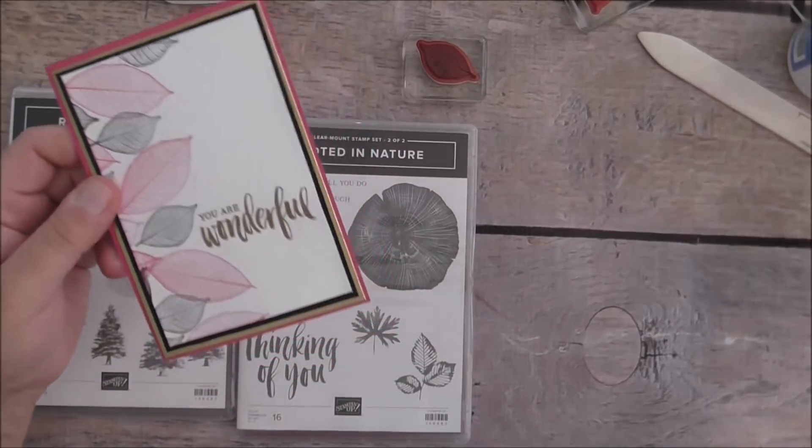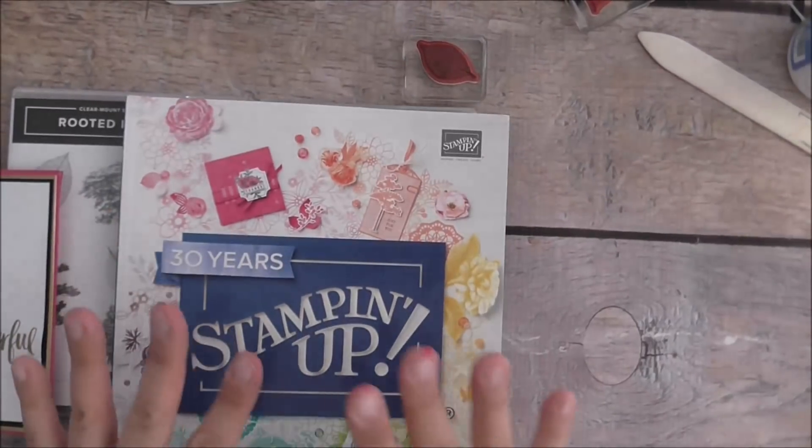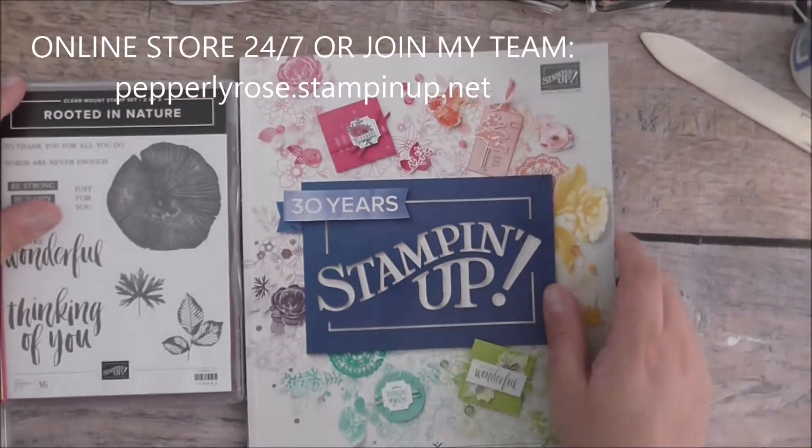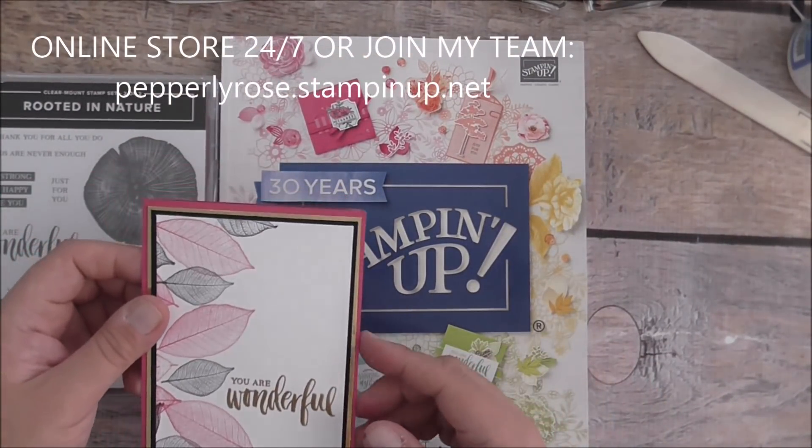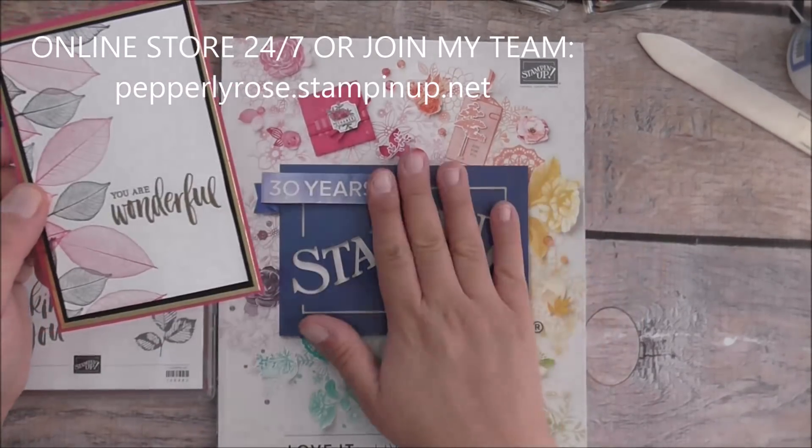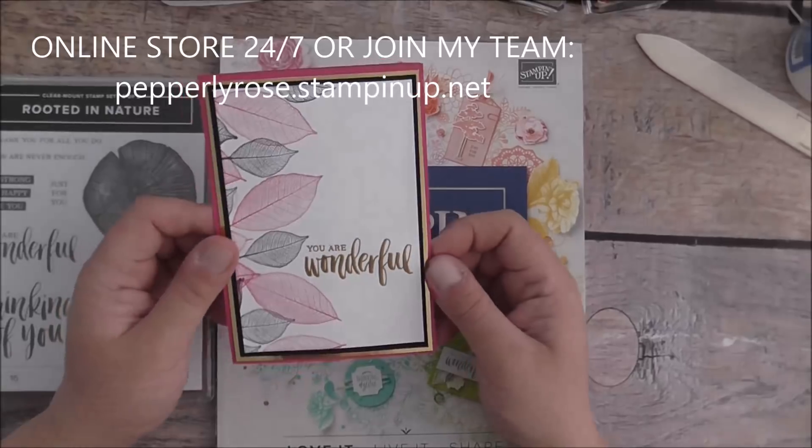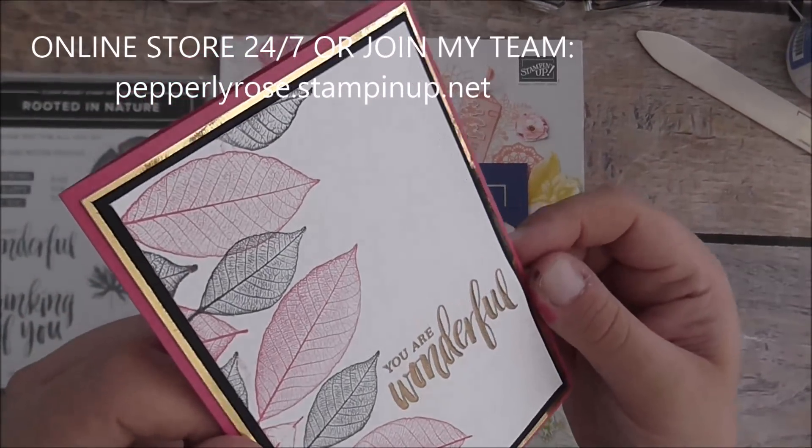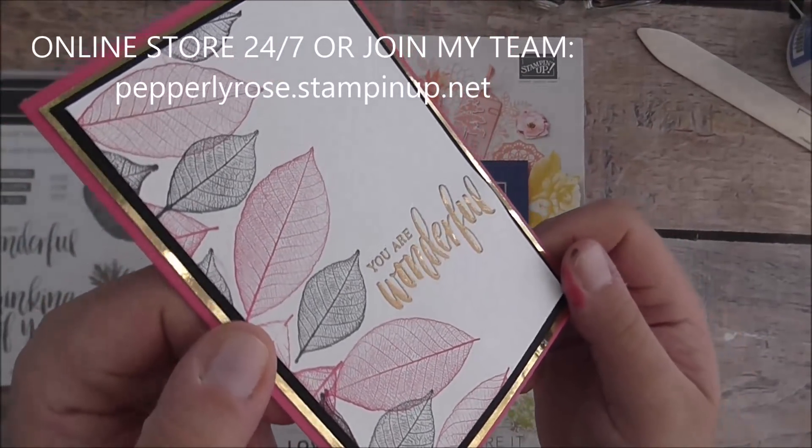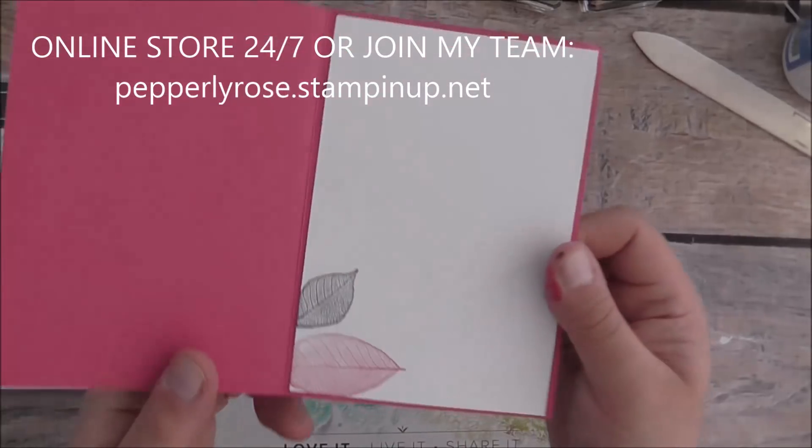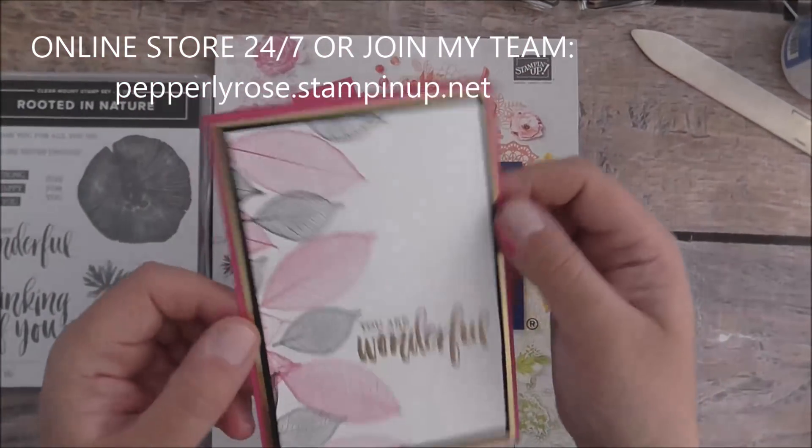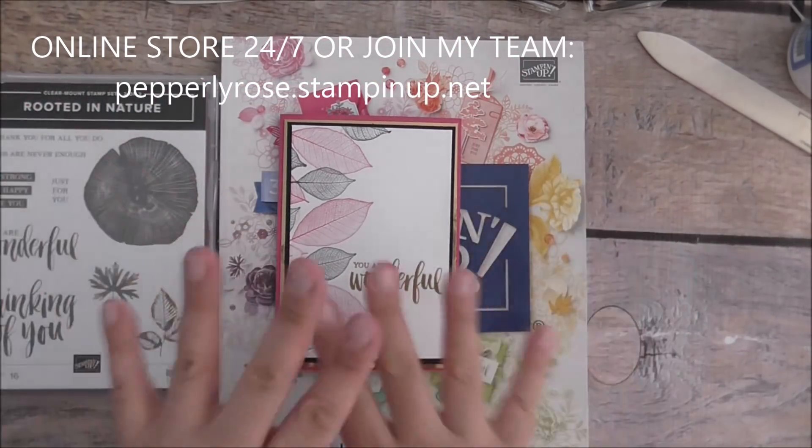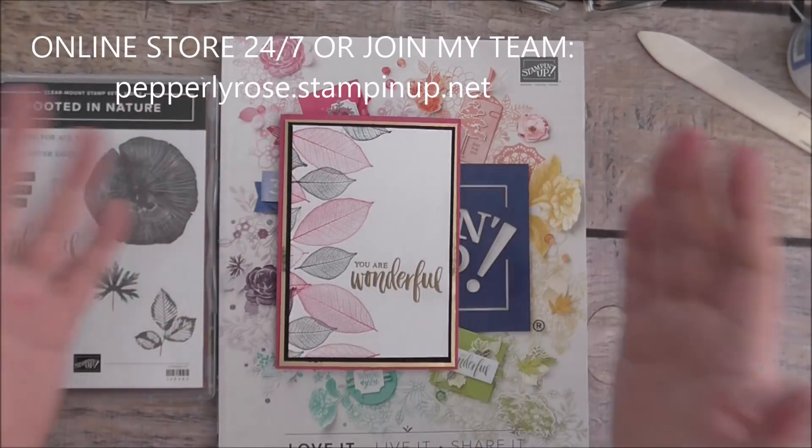If you want to be able to pre-order it, you can do so now by joining my team at pepperlyrose.stampinup.net. You can now pre-order this too if you like. I hope you like this card, so I'll just give you a close-up with the gold and the embossing. Look at that, isn't that beautiful? So that's the outside and this is the inside. Very nice. You can choose your natural colors as well. I just thought it'd be nice to think of something a little bit outside the square.